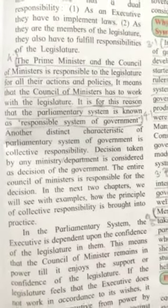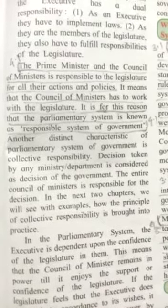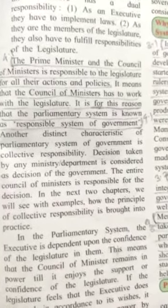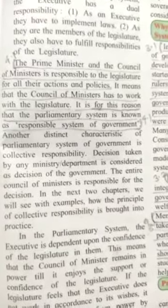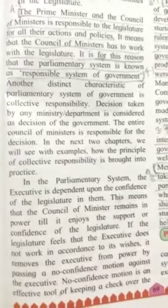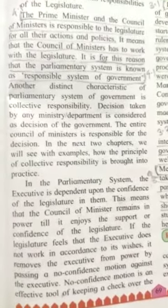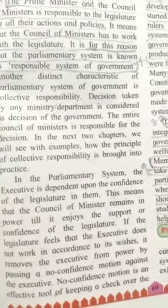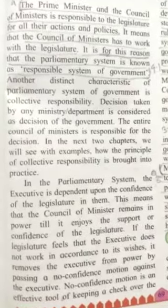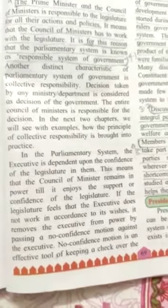Another characteristic of the parliamentary system is collective responsibility. Any decision taken by a ministry or department is considered a decision of the government, and the entire council of ministers is responsible for it. In the next chapters we will see examples of how the principle of collective responsibility is brought into practice. The executive is also dependent on the confidence of the legislature — the council of ministers remains in power only as long as it enjoys the support of the legislature. If the legislature feels the executive is not working properly, it can remove the executive from power.